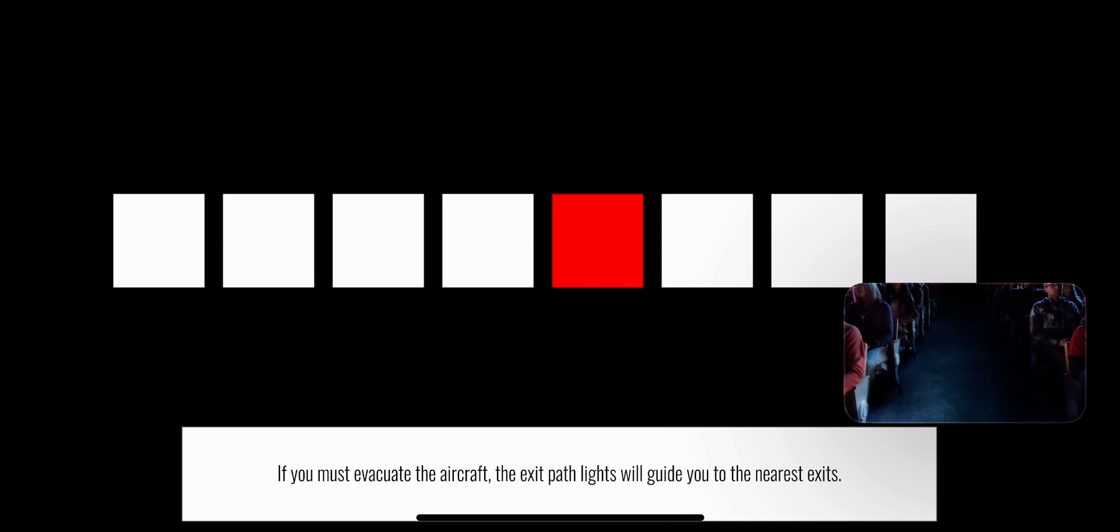If you must evacuate the aircraft, exit path lights on or near the floor will illuminate and guide you to the exit. Look for a change in color or an exit sign to indicate that you have reached an exit.